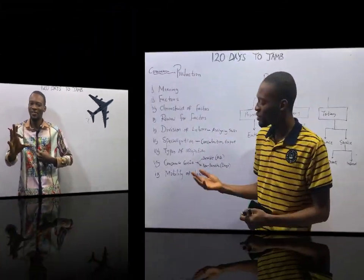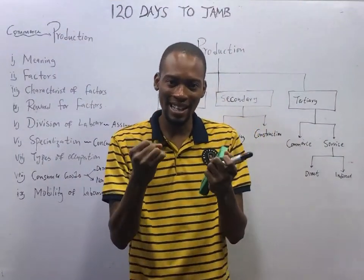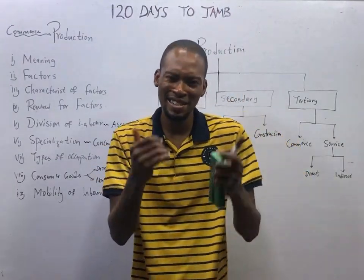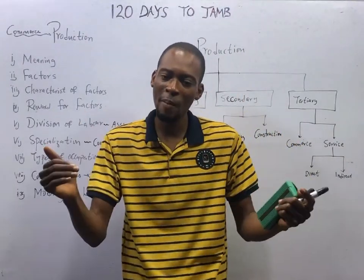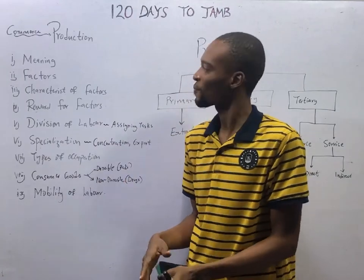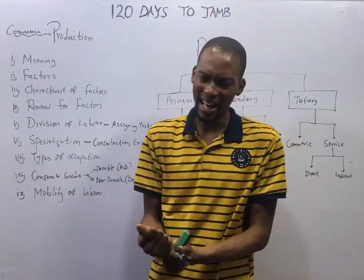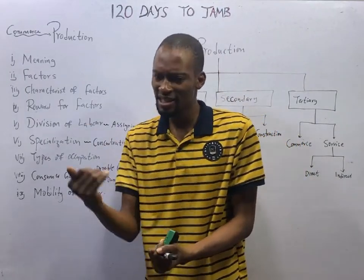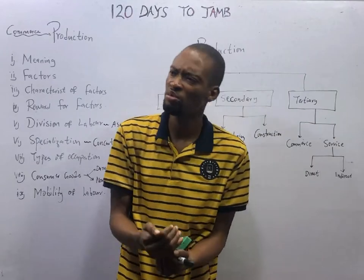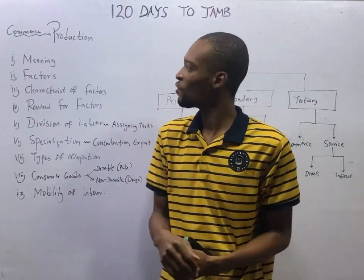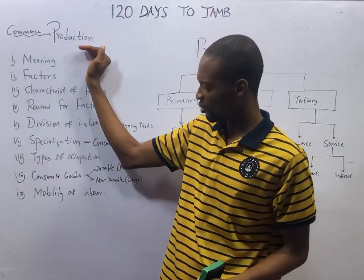Ladies and gentlemen, it is time to take off — episode number 8 of the more than 20 days to Jump series with Flash Isaac. In this episode and episodes 9, 10, 11, 12, and possibly more, we shall be dealing with production.